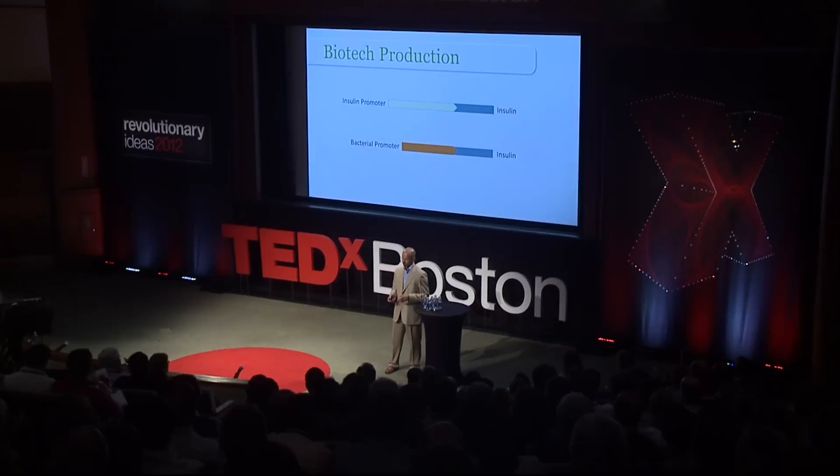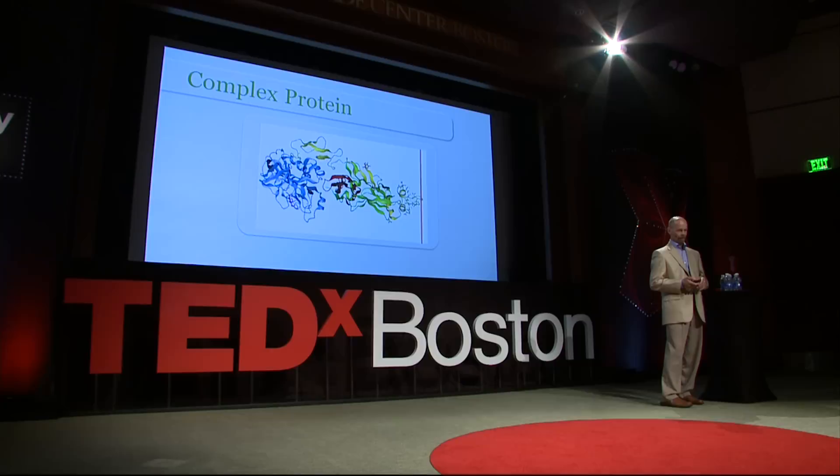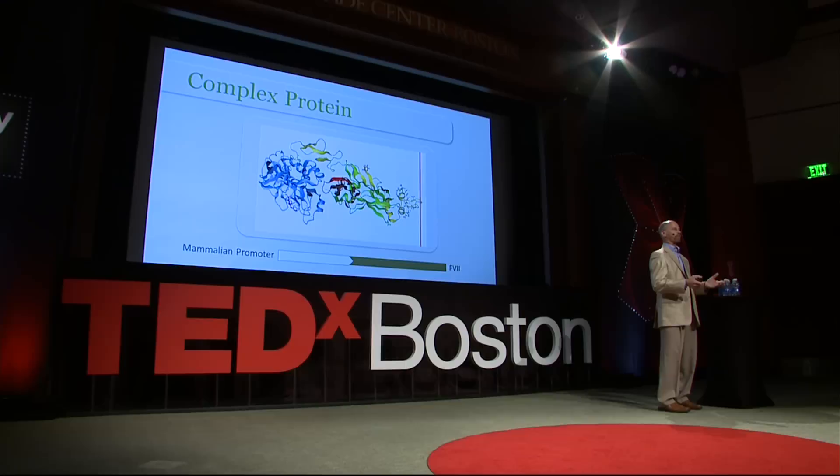But some of the proteins we want to make are very complex. This is factor seven — we all have that in our body, but sometimes it's used to treat people who have clotting disorders. If you want to make this protein, you need a mammalian cell. One that's used often is Chinese hamster ovary cells — they grow very well in cell culture. If you take the coding sequence and link it to a promoter that works in these cells, you grow the cells and they'll secrete this out into the media, and you can purify it and use it as a drug. This is the way most biotech drugs are made today.